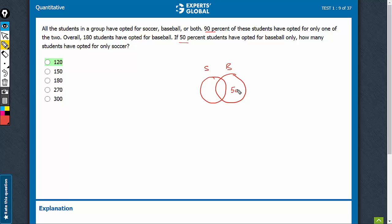Baseball only is 50% and 90% have opted for only one of the two. That means this part is 40%. Everybody has opted for at least one of the two.